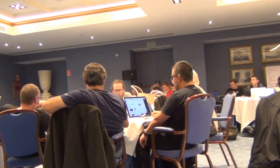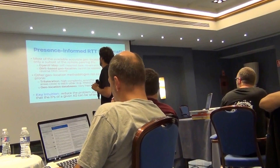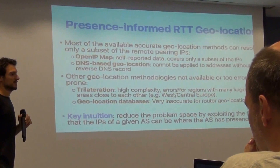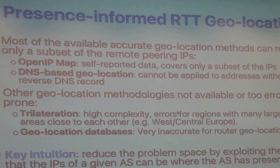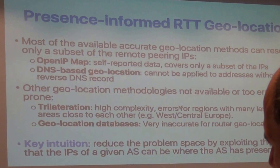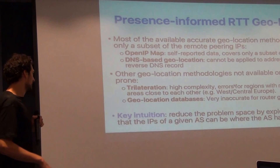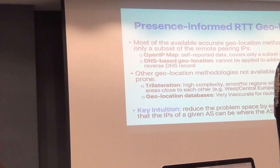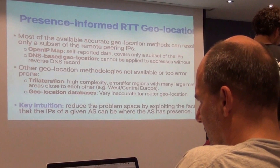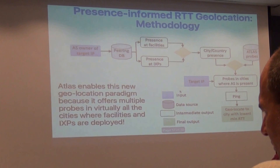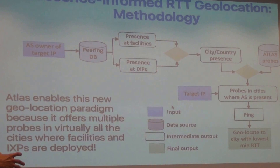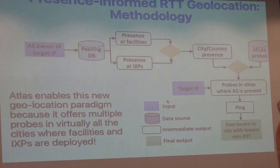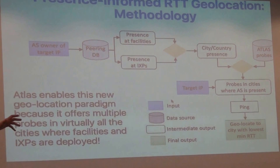Now we address the question: where are these remote peers? So far we've solved whether a peer is remote or not, but not where they are. We use available geolocation techniques considered accurate, like OpenIPMap and DNS-based geolocation, but these can geolocate only a subset of IPs. For the rest, we fall back to less accurate techniques like geolocation databases. There are complex techniques like latency-based trilateration, but there's no readily available implementation and the hackathon was too short. So we implemented something completely new on the Atlas platform.